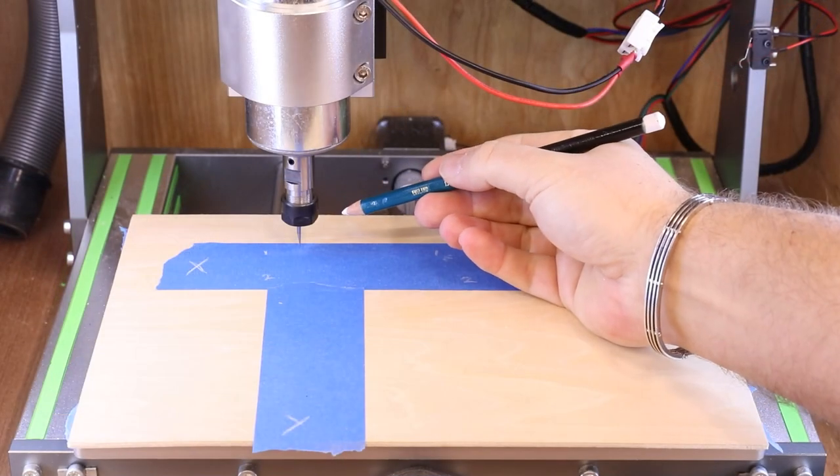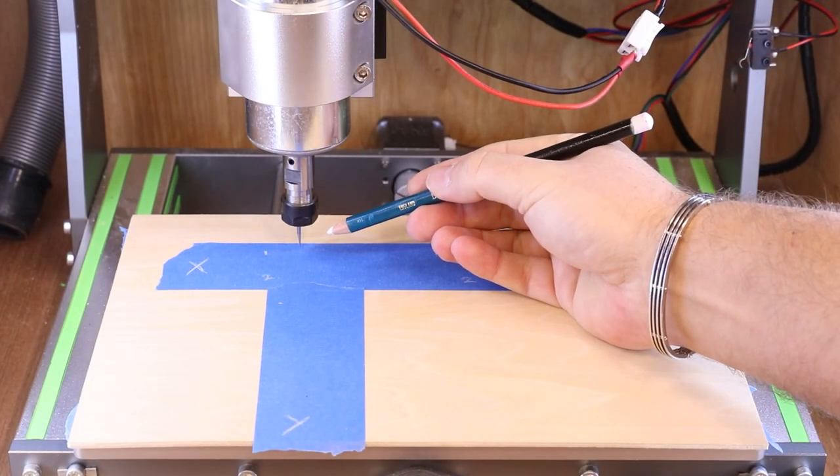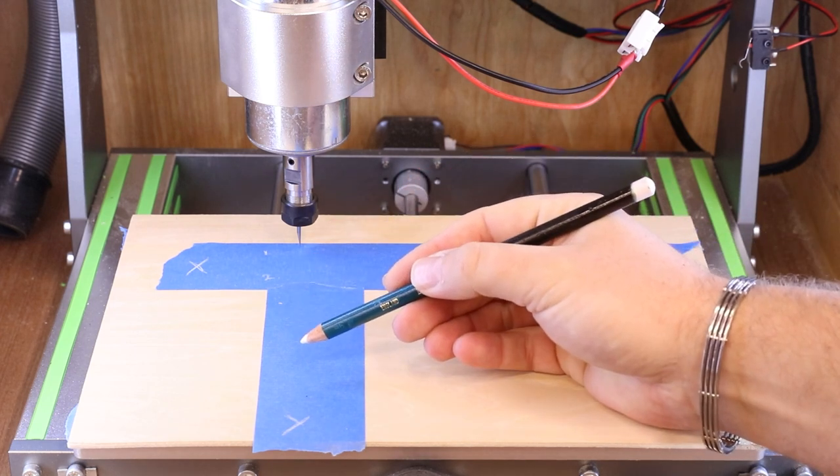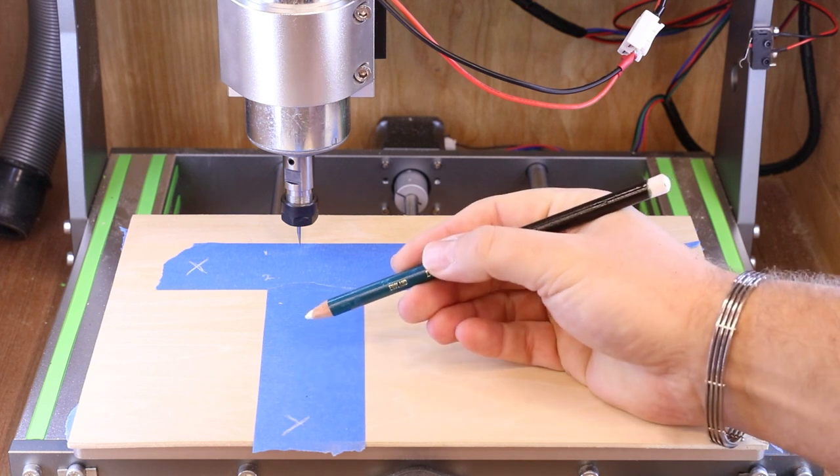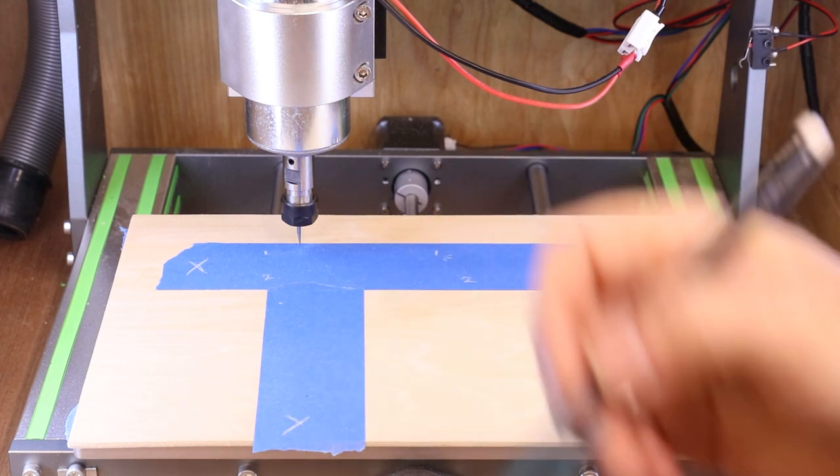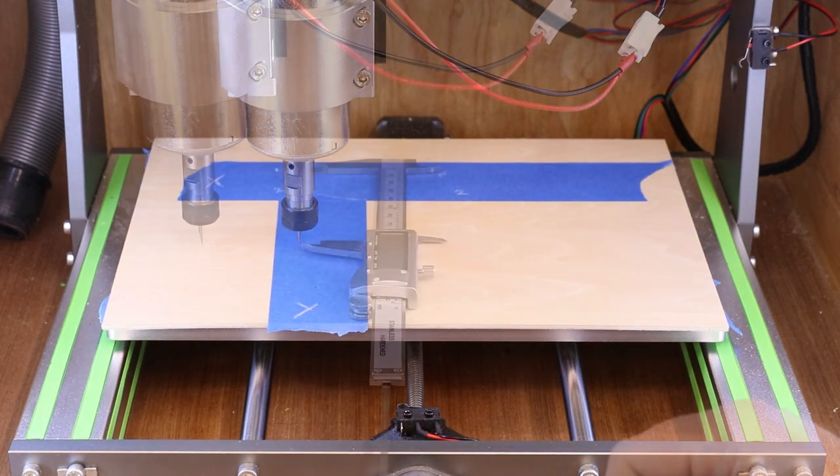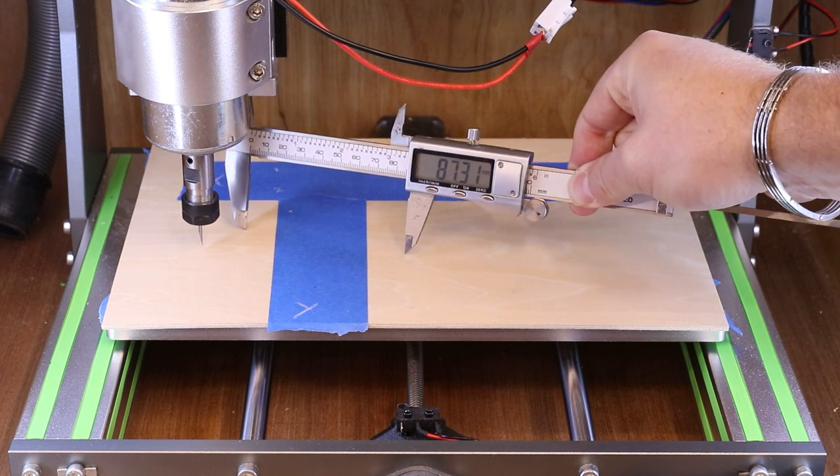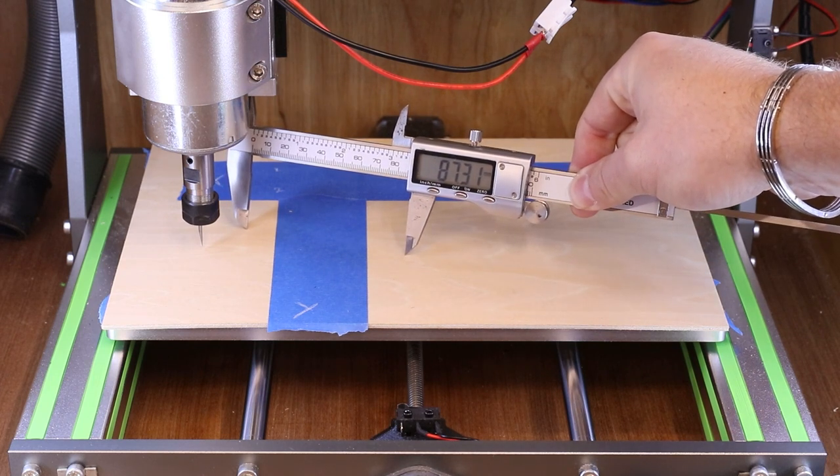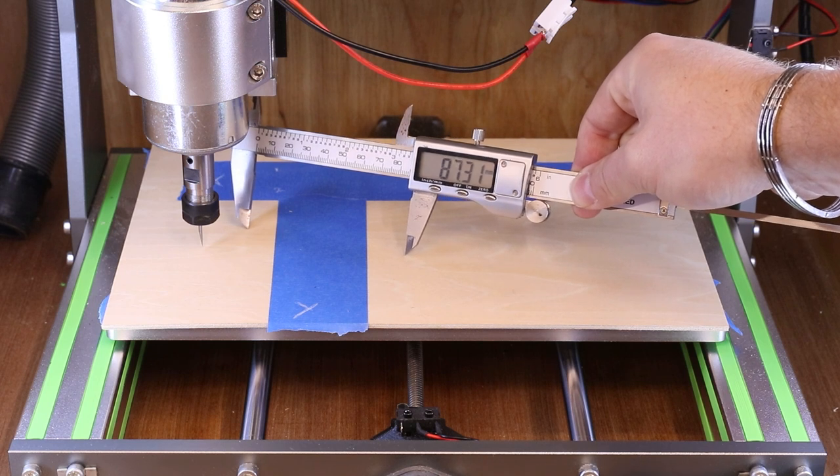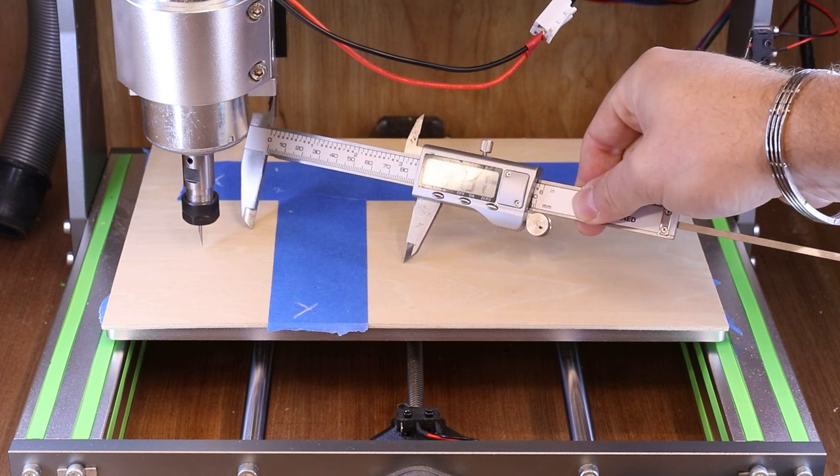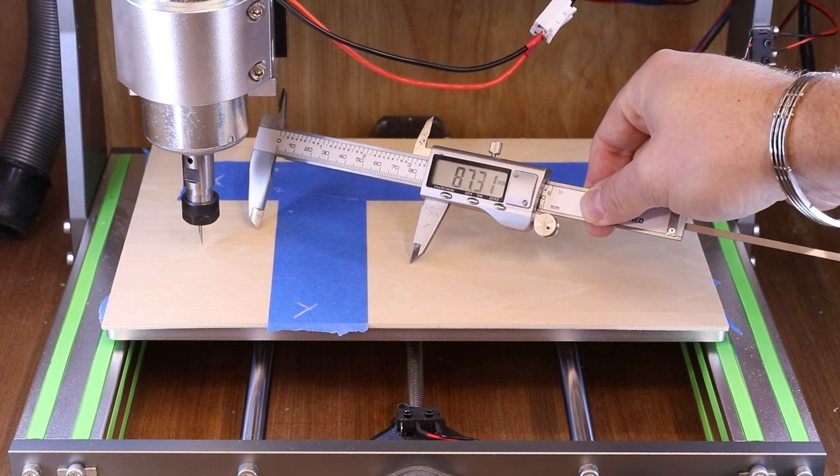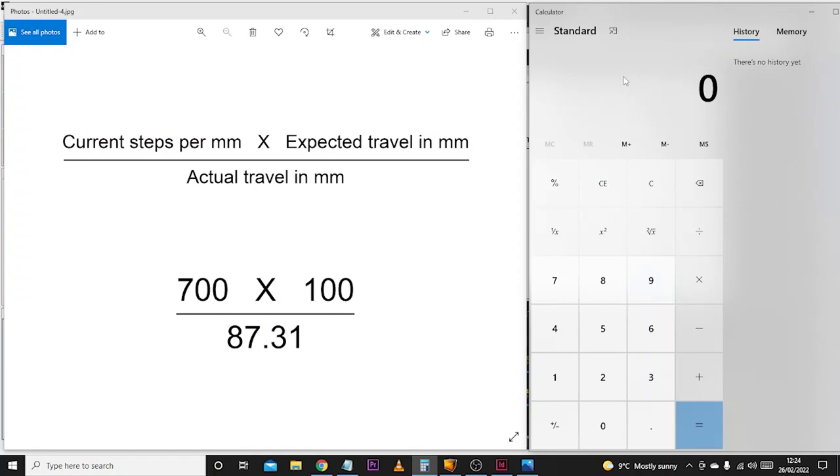Exactly the same test again. We're going to bring this in 10 millimeters to take the backlash off, down touch the material, make a mark, back up, travel an expected 100 millimeters, down touch the material again make a mark, measure that distance and do the new calculation. That came out at 87.31, so not far off what the original reading was on the X axis which was 87.1.